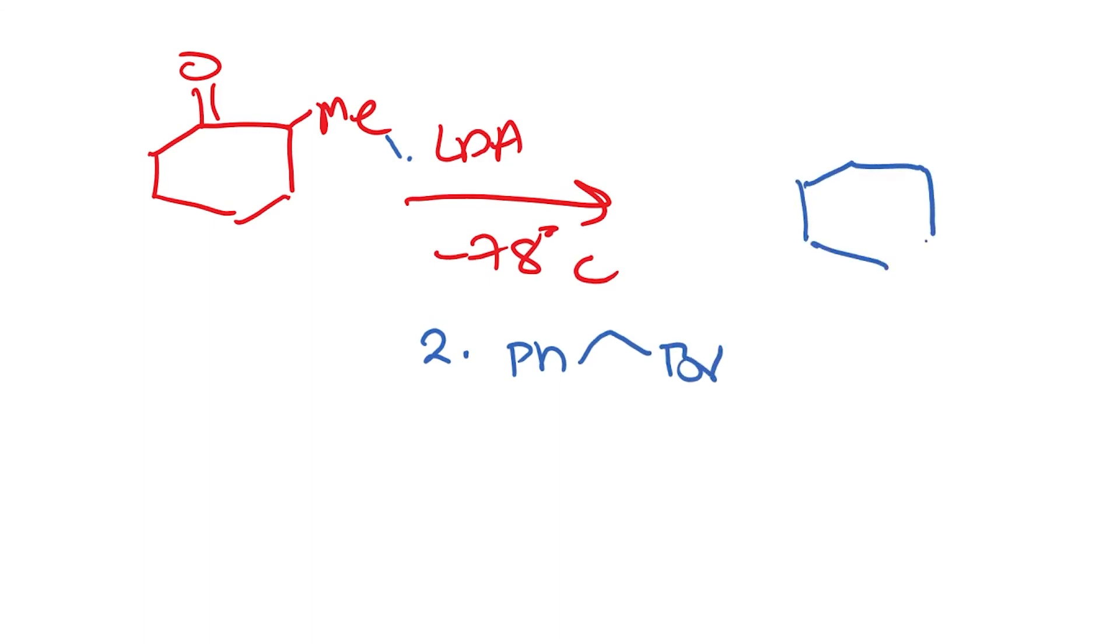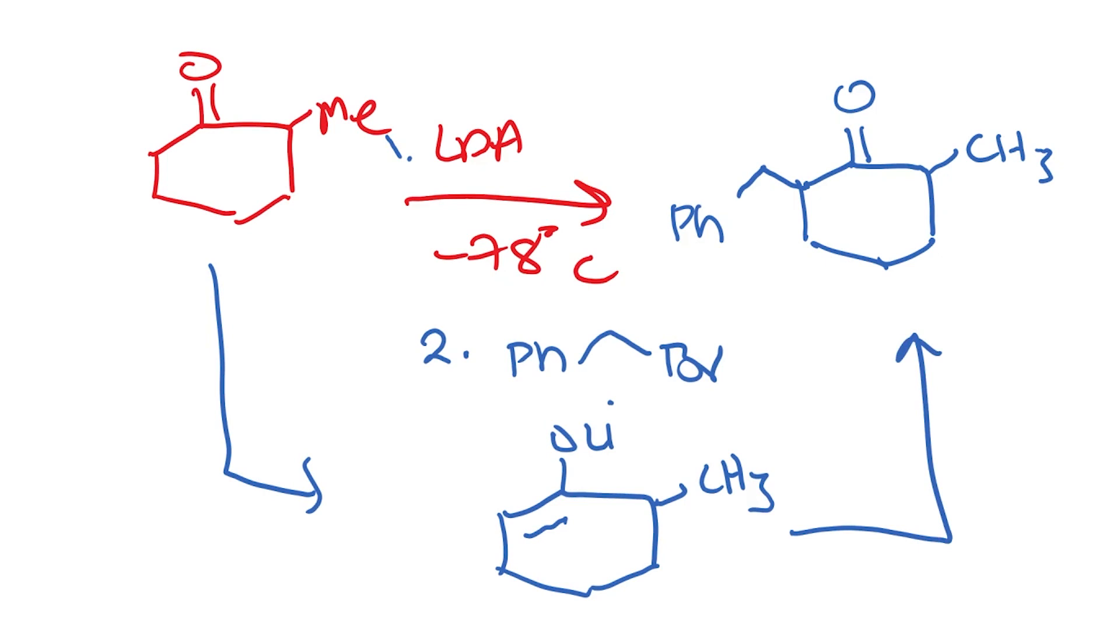Let me show one last example. If we add LDA at minus 78 degrees centigrade and then number two is reacted with benzoyl bromide, the product that is formed is this. The intermediate as you know would be the enolate and studies show that this yield of this enolate is pretty much quantitative, 99% to be accurate. This is nearly quantitative and then the alkylation reaction is going to give you the product.